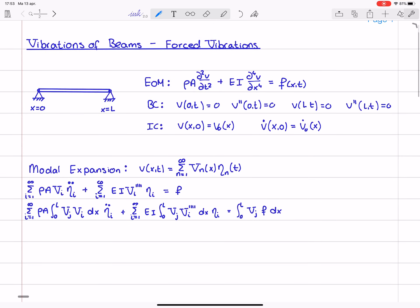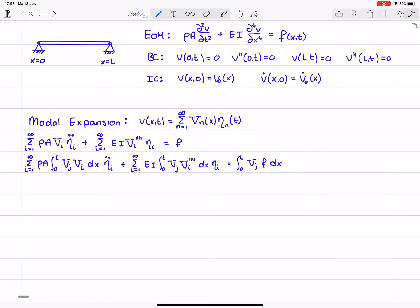So by applying the orthogonality conditions, these integrals become extremely simple. All terms are zero except for the term where i is equal to j. We only need to consider this case and obtain that eta i double dot plus omega i squared times eta i itself is equal to q i.